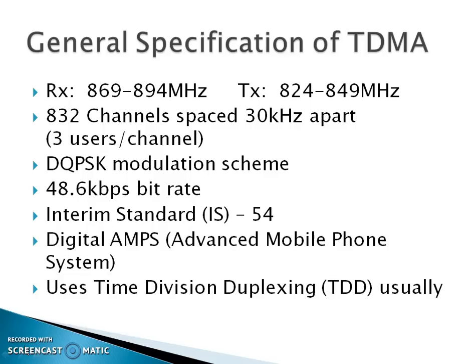First, the general specifications for TDMA: receiver frequencies are 869 to 894 MHz, and for the transmitter it is 824 to 849 MHz. Channel spacing is 832 channels, which are 30 kHz apart, meaning three users per channel. The modulation scheme used is DQPSK, and the bitrate is 48.6 kbps. The interim standard is IS-54.